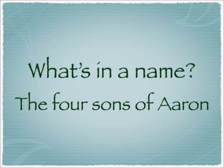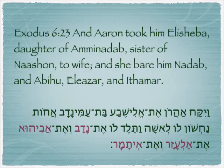Shalom. Today we are going to discuss the names of the four sons of Aaron. We first see them in Exodus 6:23: 'And Aaron took him Elisheva, daughter of Aminadav, sister of Nachshon, to wife, and she bare him Nadav and Avihu, Elazar and Itamar.'